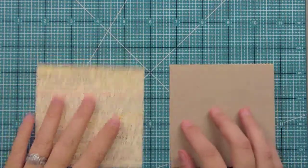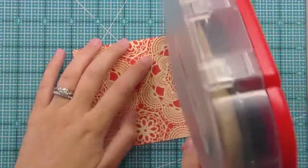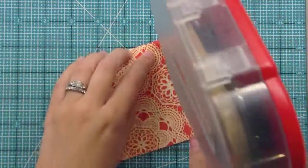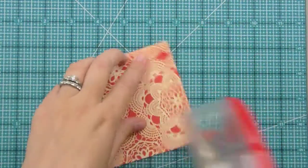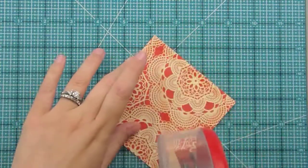And right now I'm starting off with some October Afternoon paper and a 4x4 card base. I'm going to adhere that paper to the front of the card. It saves pattern paper to just adhere it to the front instead of making an entire card out of your pattern paper. So I'm just putting adhesive on the back with my ATG gun.